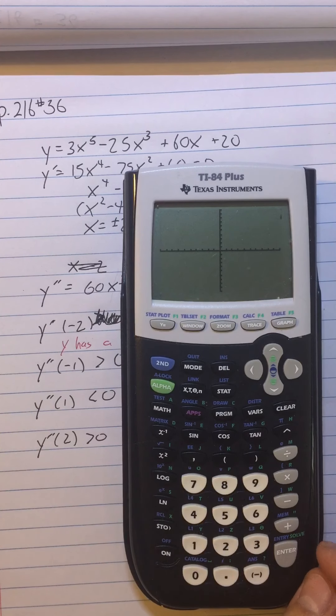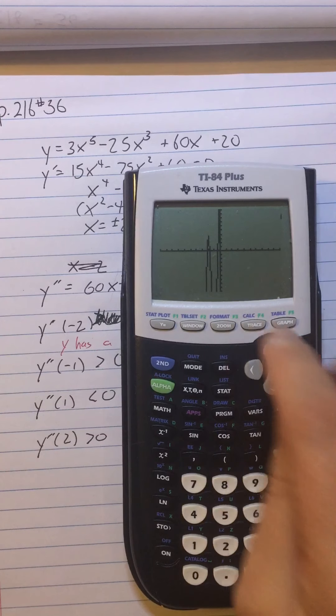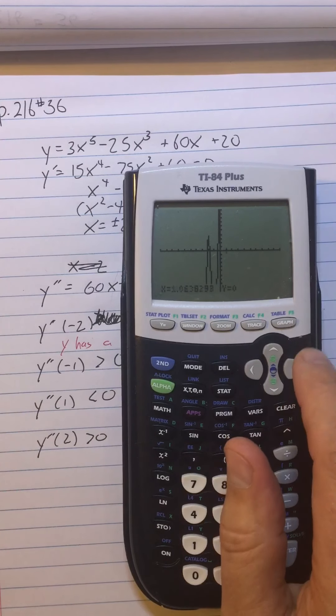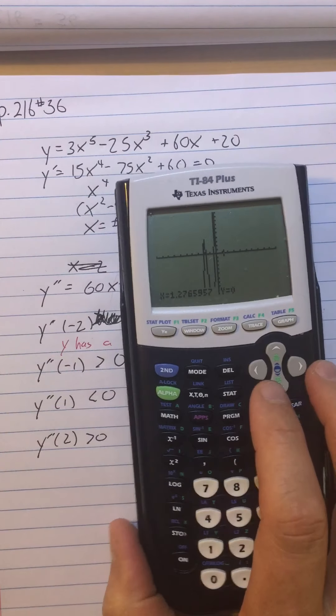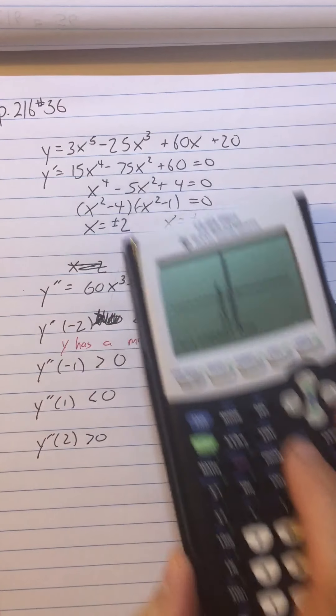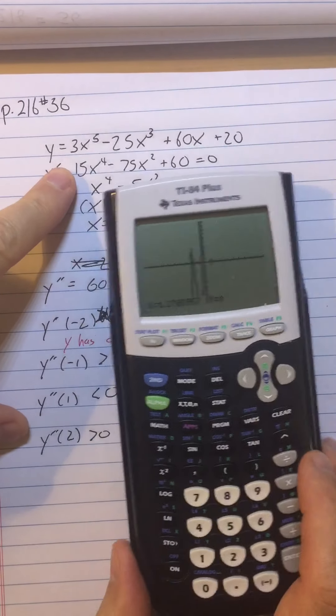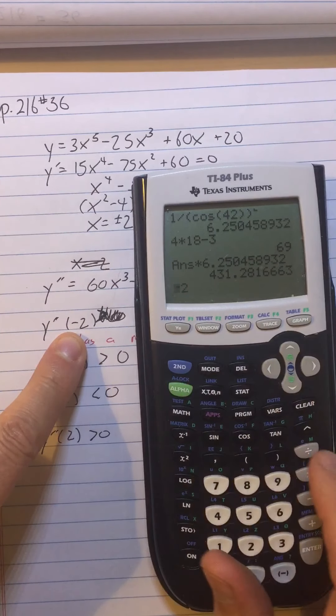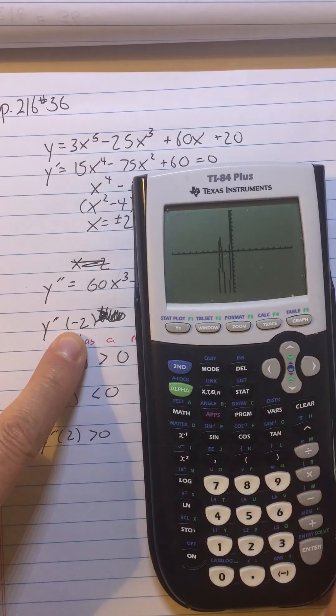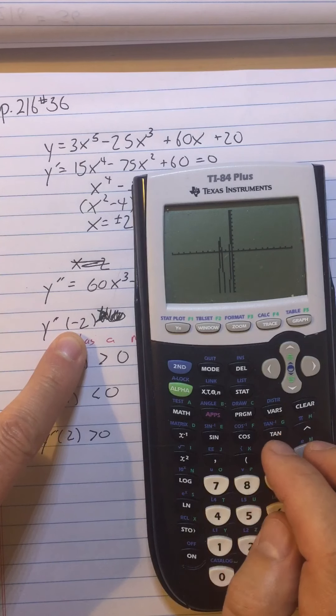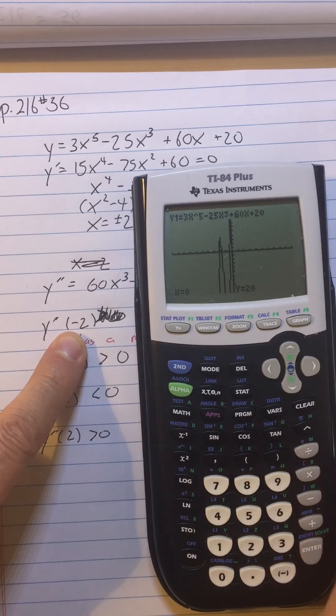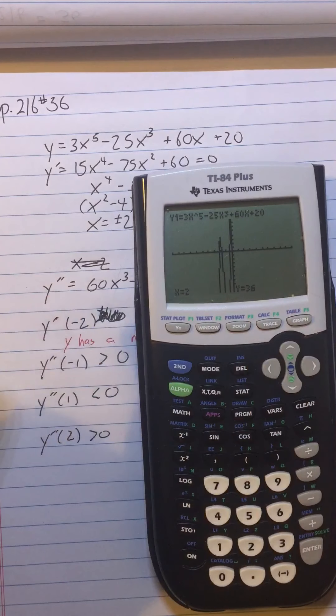So here's maybe a nice calculator technique. If I want to evaluate that a bunch of times and I don't want to write y1 every time, I can also just graph it on a standard window. So do zoom six to graph it on a standard window. And then what I can do is just go into trace mode. Once it's done graphing, trace mode. And then what I do is just put a value. If I'm in trace mode, I think I can just hit a value, right? Like two. Yeah. Enter. And I get 236. So I know two is 36.